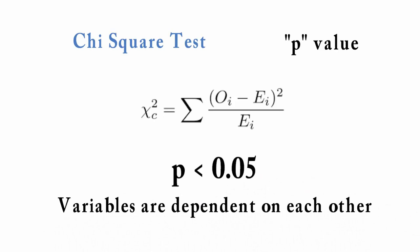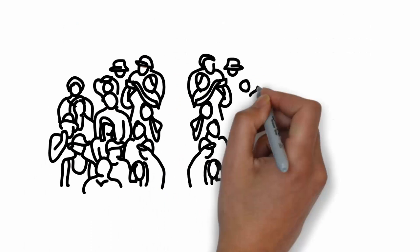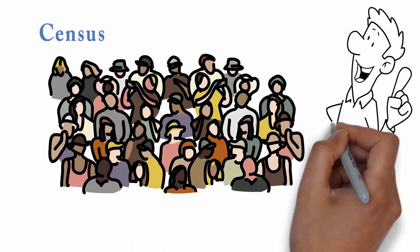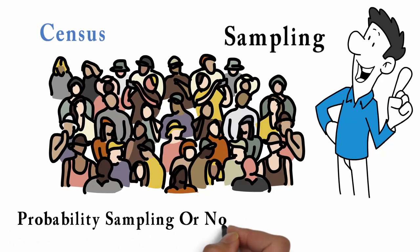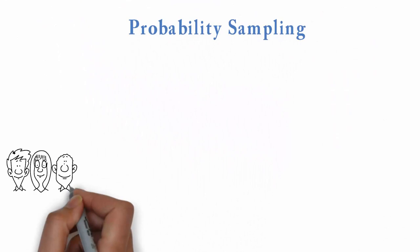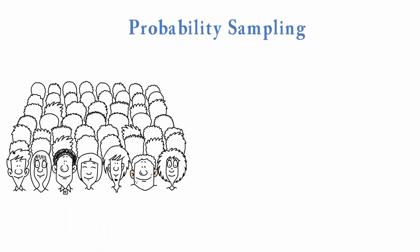The strongest statistical result is obtained where we survey the whole population. This we call a census. Where this is not possible, sampling must be done. We have probability sampling or non-probability sampling. Probability sampling allows every member of the target population to have an equal chance of being selected in the sample and includes simple random sampling, systematic sampling, stratified sampling and clustered sampling.